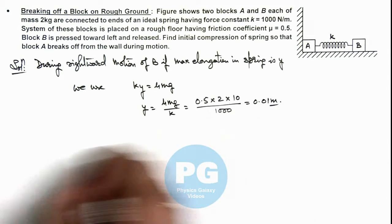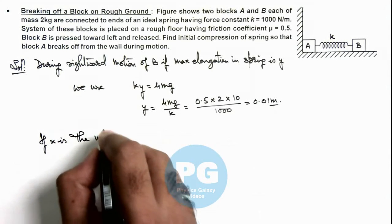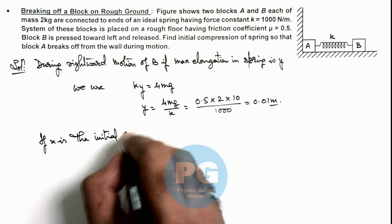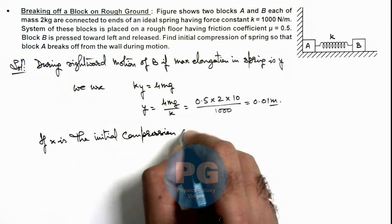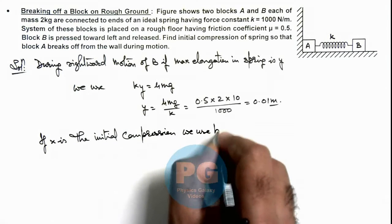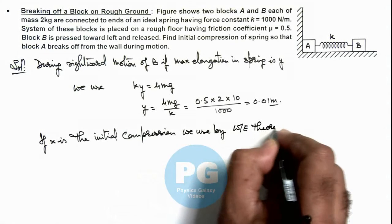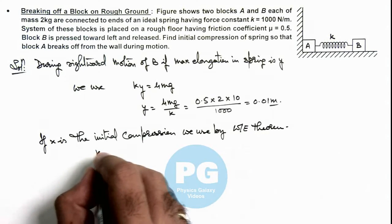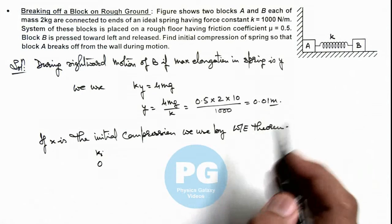Now we can write if x is the initial compression, we use work energy theorem. Initial kinetic energy of the blocks would be zero when the block B is released after pushing by a distance x.